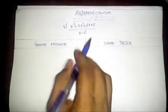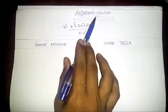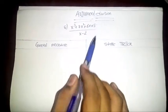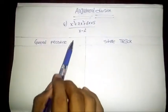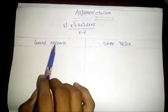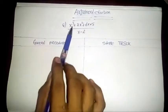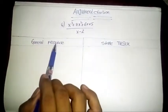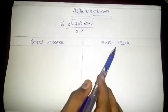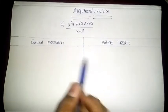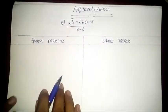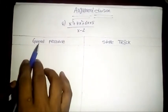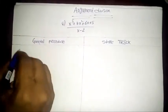Hi, today I'm going to discuss about argument division. We have to show an algebra expression with the help of the general procedure and with the help of a simple trick. First of all, I have discussed the general procedure.